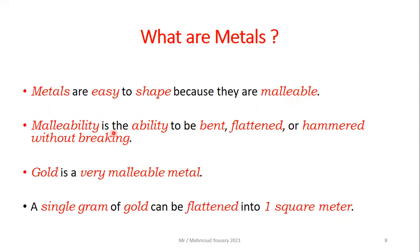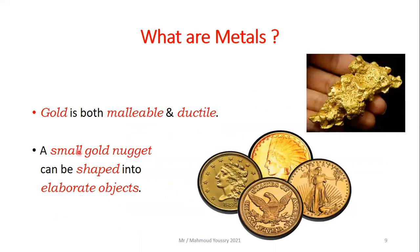Malleability is the ability to be bent, flattened, or hammered without breaking. Gold is a very malleable metal — even a single gram of gold can be flattened into one square meter. Gold is both malleable and ductile.